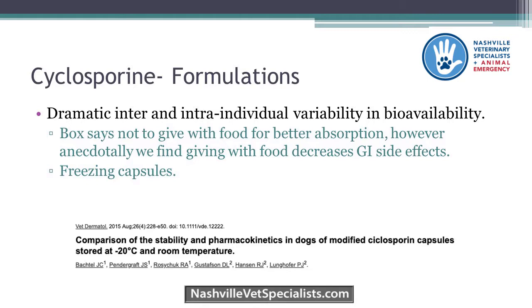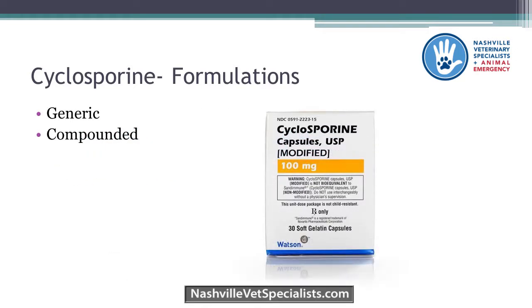Freezing the capsules can help mitigate vomiting. Pharmacokinetic studies show no difference between frozen and non-frozen capsules, and clinically I think it helps immensely — so we have almost every patient freeze the capsules. For generic cyclosporine: try to get owners to commit to 60 days of name-brand therapy first, because a study using generic cyclosporine in atopy showed a 25% failure rate compared to name brand. If you use generic and it fails, you don't know if it's the generic or if the drug just doesn't work for that patient. Compounded cyclosporine we don't trust very far.